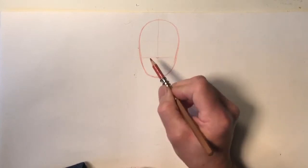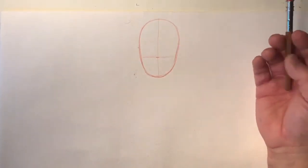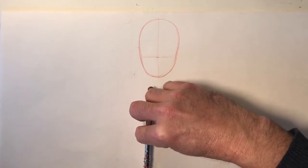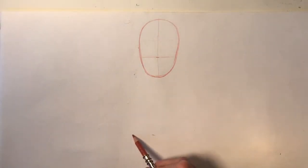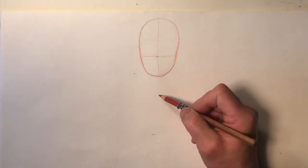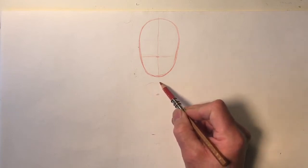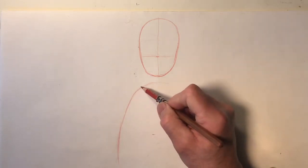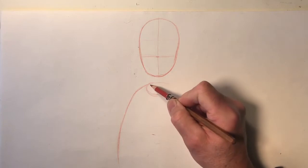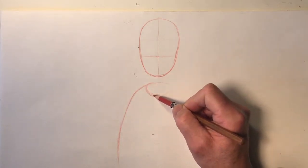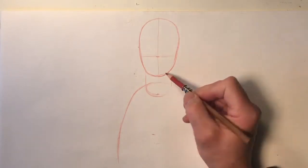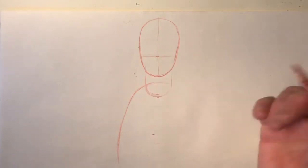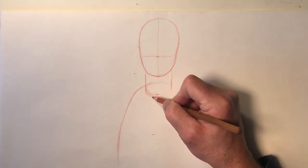I'm already dividing the head in thirds because I need some landmarks at the lower third. I'm going to use the typical proportion — bringing one head down. The nipple will be at this level, and the ribcage will be about here. The space between the chin and the jugular fossa, which makes the neck, is about one third — typically a little bit more than that.